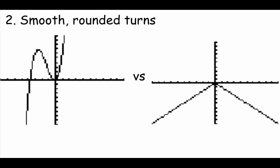The other thing we look for — if our graph has any turns or curves in it, they need to be smooth and rounded. A cubic function has smooth rounded curves. A quadratic parabola has a curve at the bottom. Compare that to an absolute value graph where it comes to a point — that's not a smooth rounded curve, so that would not be a polynomial function.